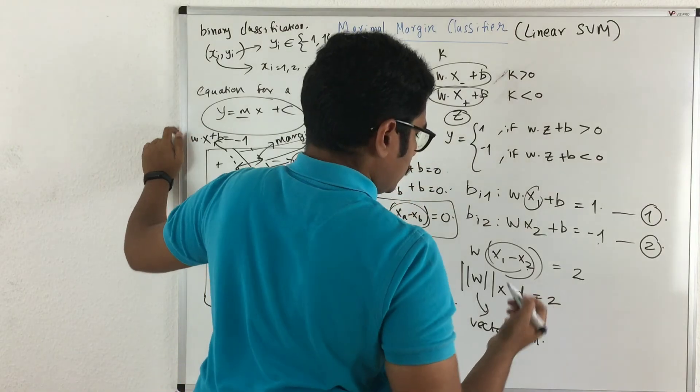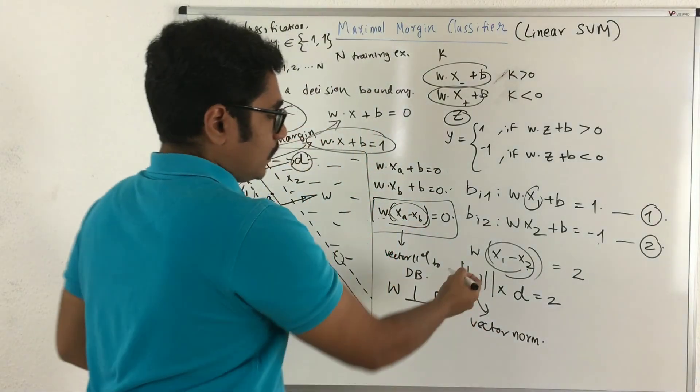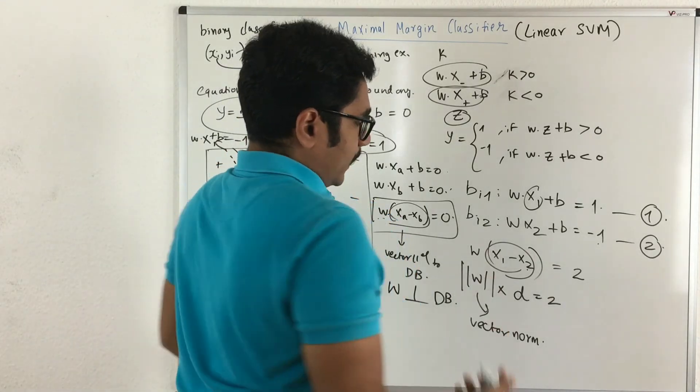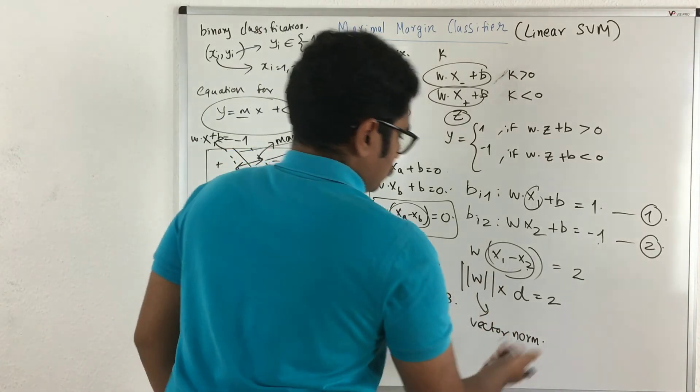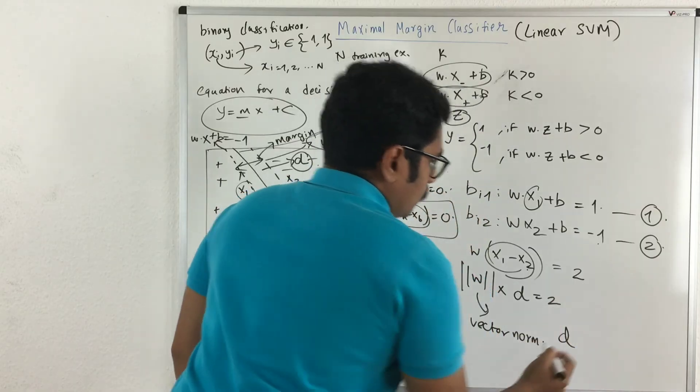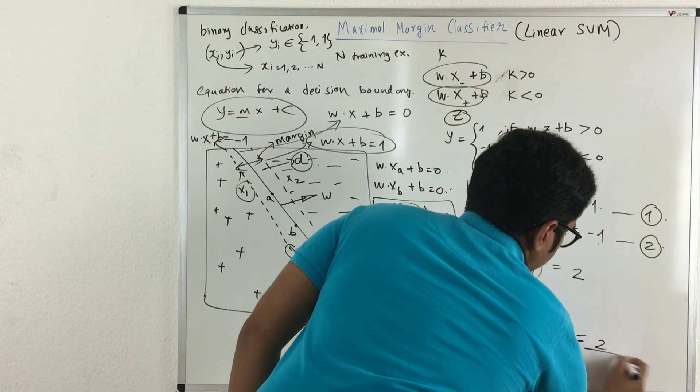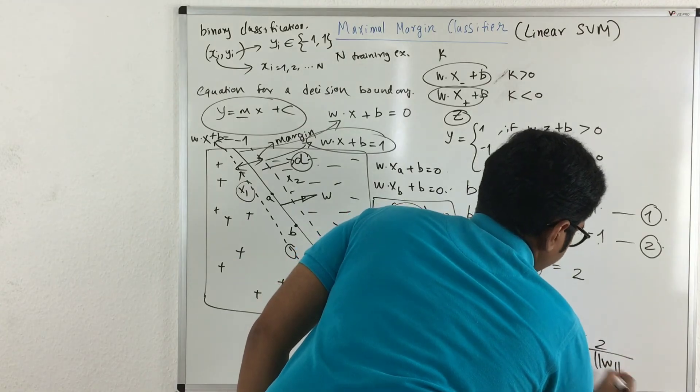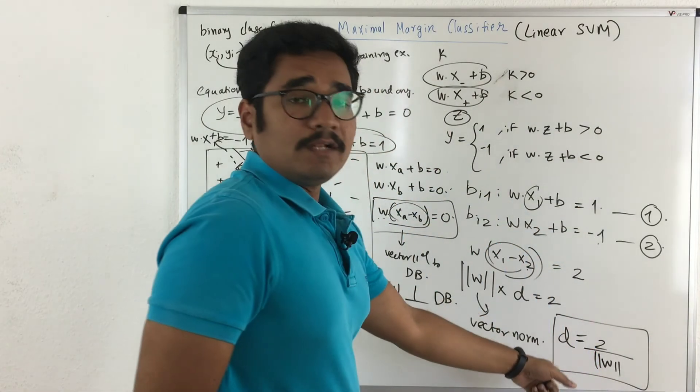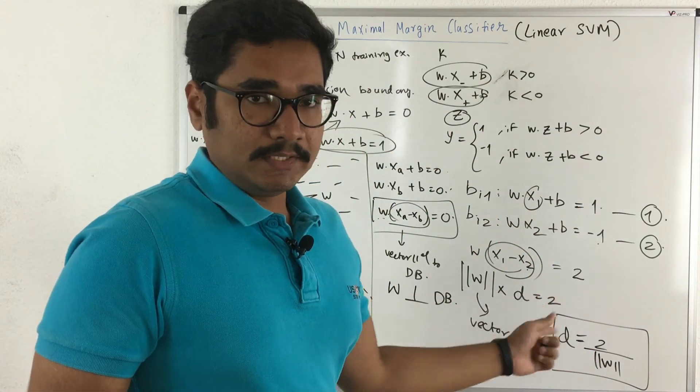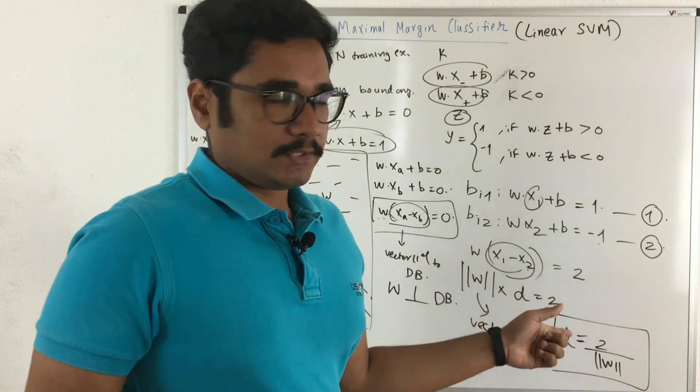So whenever in ML or in statistics, you encounter this symbol, it's called a vector norm of some magnitude for further calculations. Now if you want to estimate value of D, that becomes like this. So this is the final value for the margin in case of a linear SVM or maximal margin classifier.